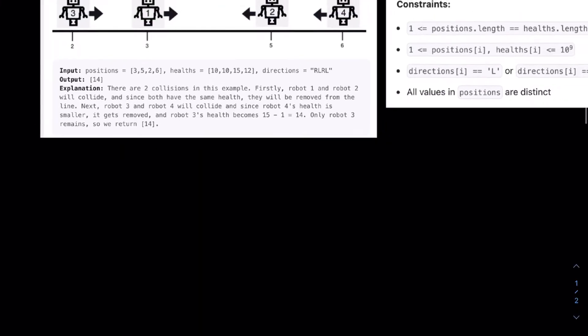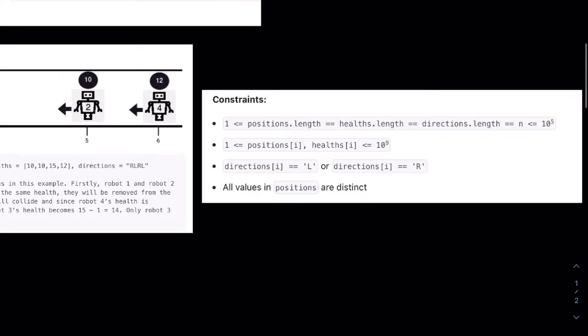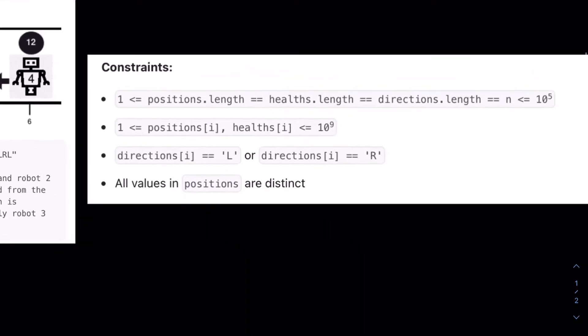Taking a look at the constraints, it's pretty important as well. We can see that all of the variables basically go up to 10 to the 5 in length. So in other words, our algorithm will probably have to be within O of N, right? So if it's O of N squared, that's too slow. O of N log N should work.